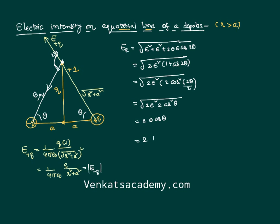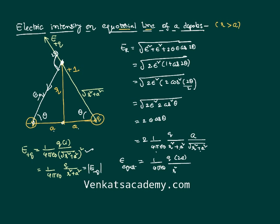Substituting the values: E = 1/(4πε₀) · q/(r² + a²), and cosθ = a/√(r² + a²) from the right-angle triangle geometry. Simplifying the full expression, the electric field on the equatorial line is: E = 1/(4πε₀) · q·2a / (r² + a²)^(3/2). This is the exact answer.